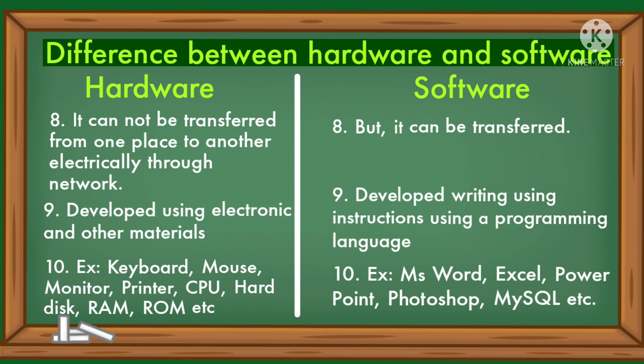Examples of hardware include keyboard, mouse, monitor, printer, CPU, hard disk, RAM, ROM, etc.